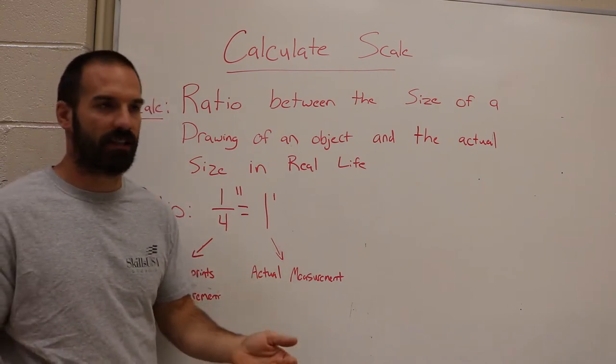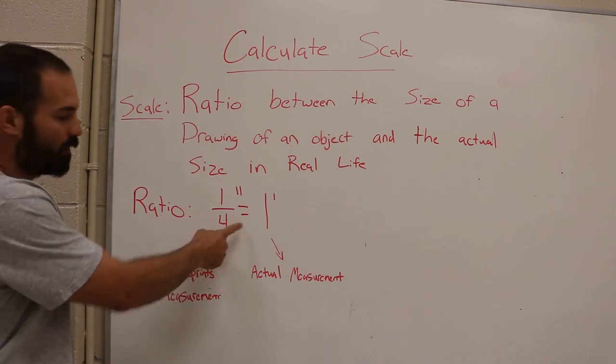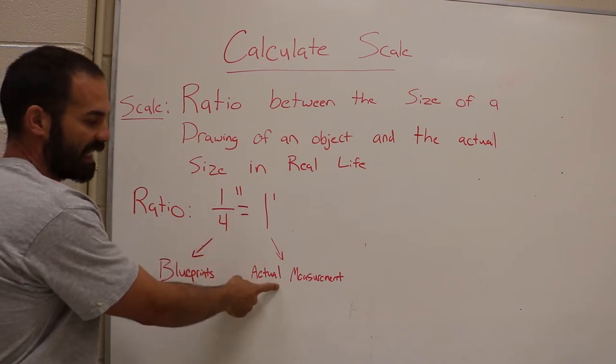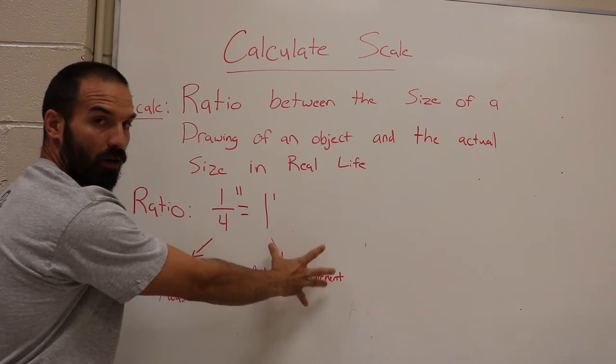In this scenario we're going to use a quarter of an inch equals a foot. So that quarter inch is the blueprint's measurement and that one foot is the actual measurement. So this is the drawing measurement and that's going to be the measurement in real life.